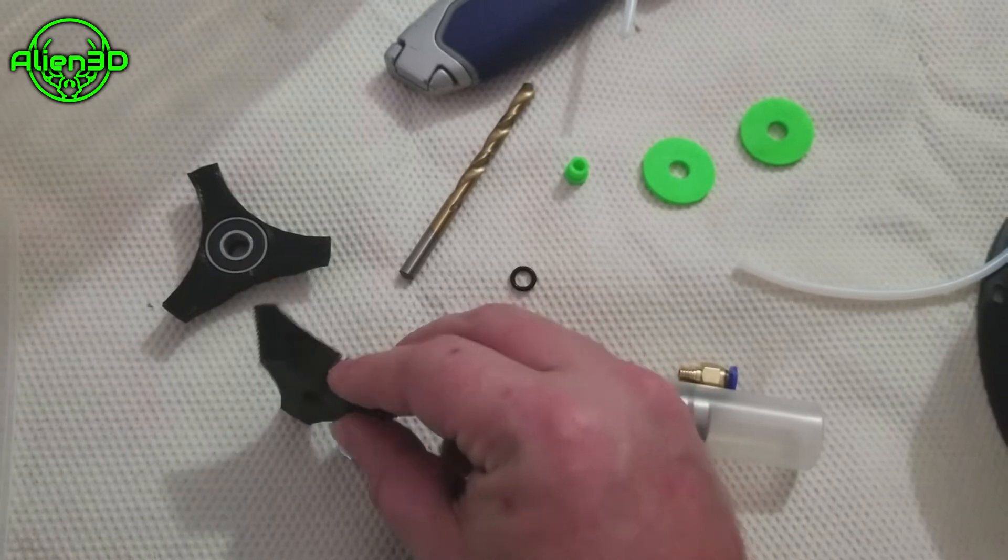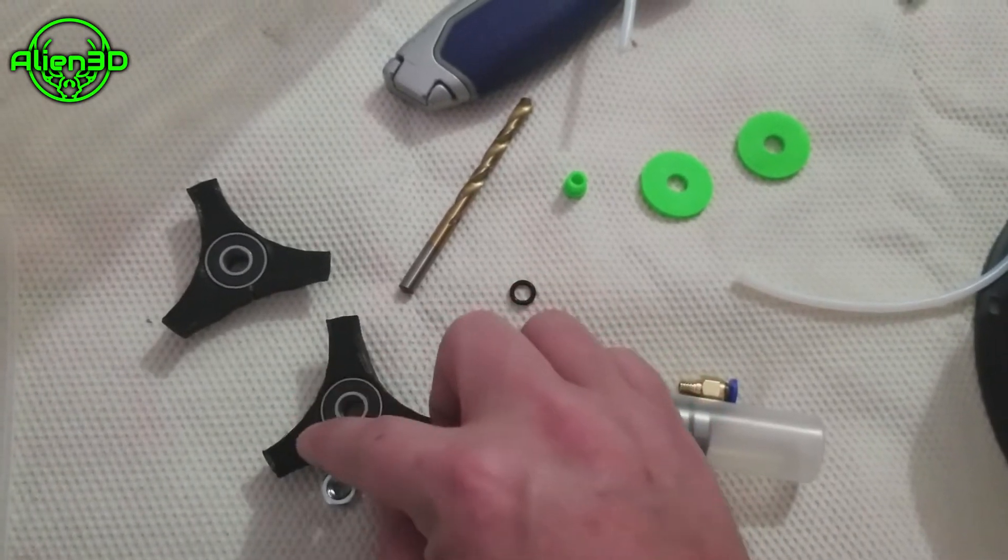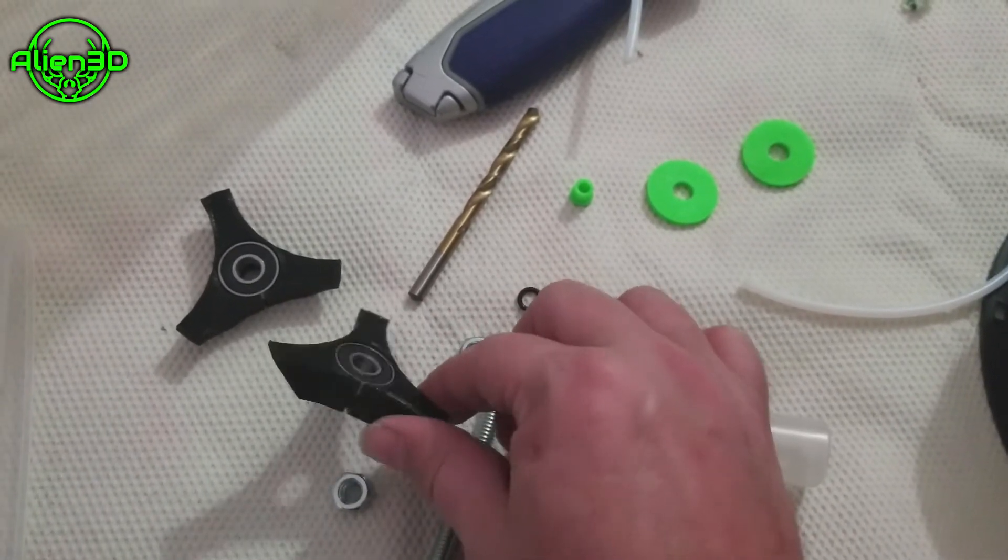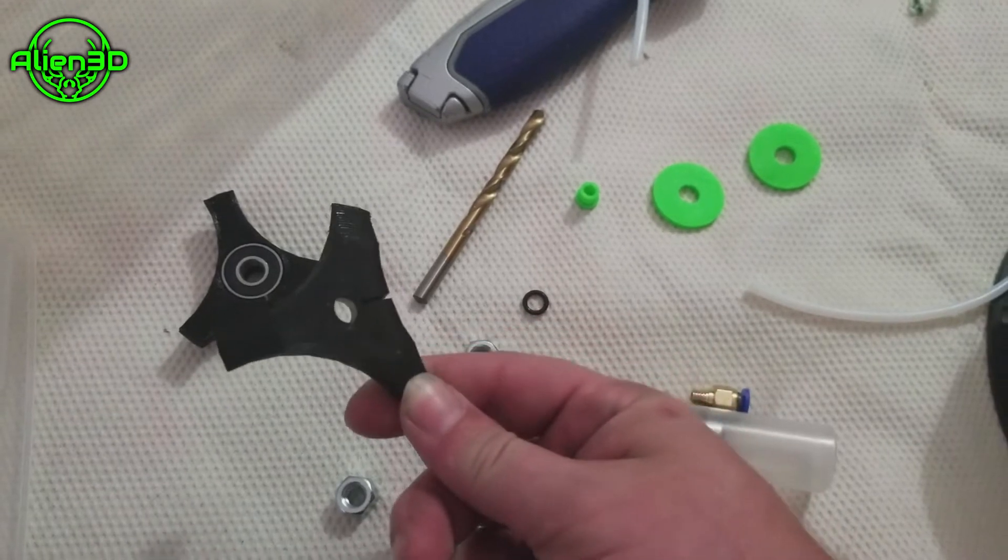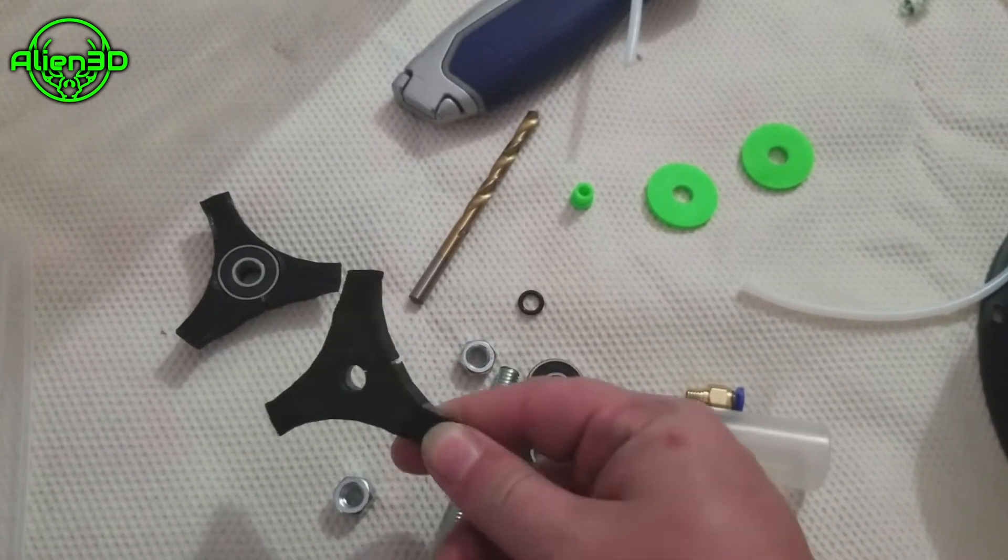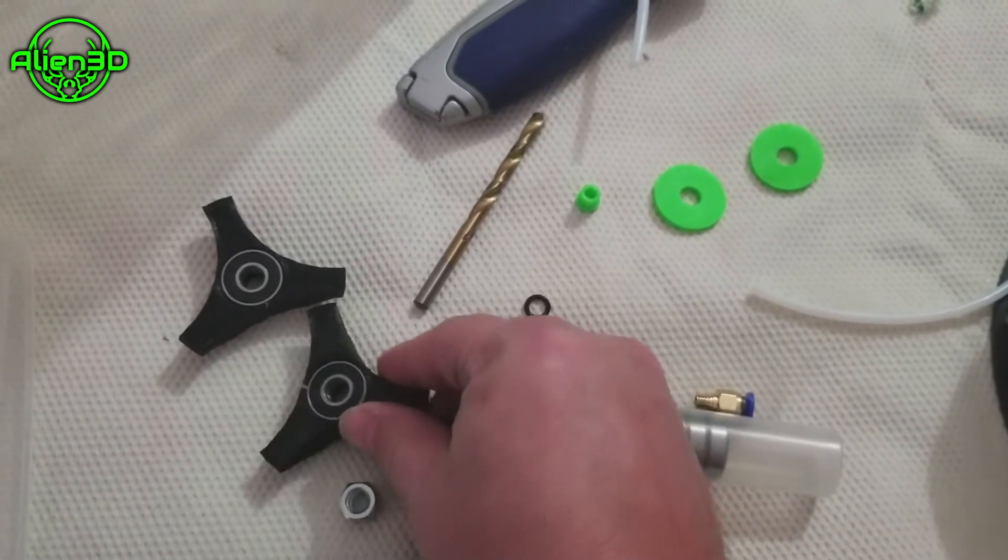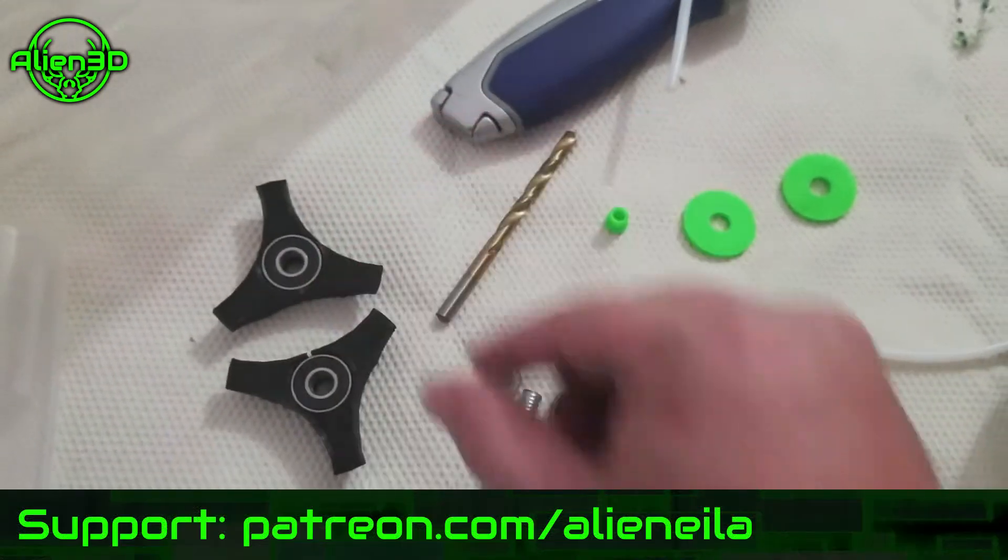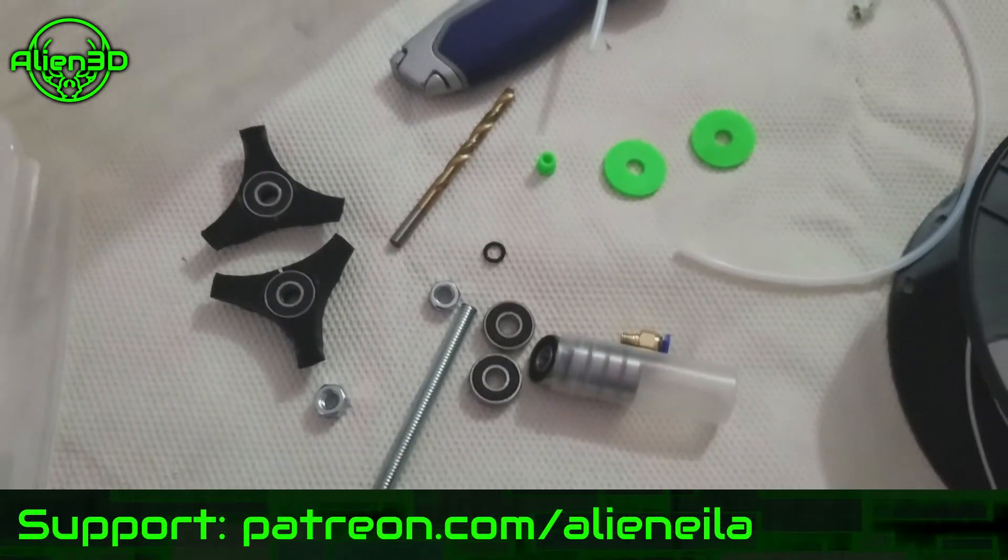Then we've got the threaded rod, the bearings, and this printed part. I will provide a link. This is version one - mine cracked because the inner holes were tight. Version two I made the holes a little wider, but for this one I just shoved the bearings in and it cracked a little but still holds. I've been using it for a couple months now.